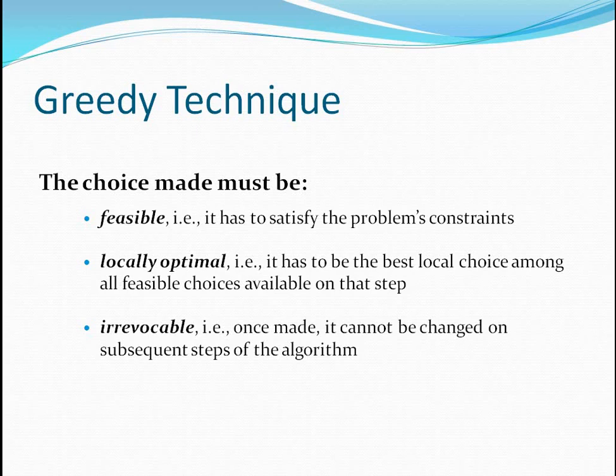There are several choices that must be made in greedy technique: feasible, locally optimal, and irrevocable. A choice is said to be feasible when it satisfies the problem's constraints. It is said to be locally optimal when it is the best local choice among all feasible choices available at that particular step. And it is irrevocable — once the decision is made, it cannot be changed in subsequent steps of the greedy algorithm.